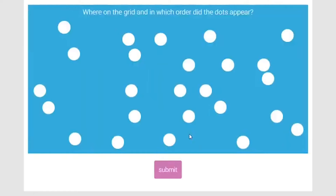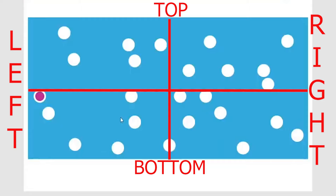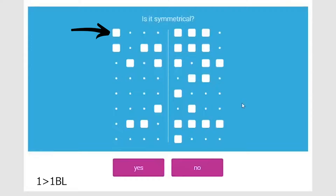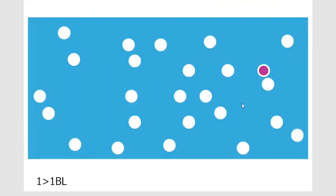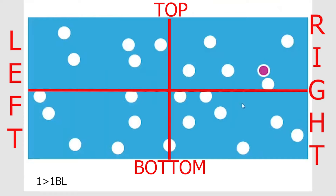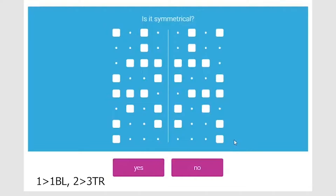On the next level, we start with the memory question. Creating a grid, the colored dot appears at the bottom left — first position — so we note '1BL.' Looking at the symmetry question, row one is not symmetrical, so we conclude the figures are not symmetrical. Next memory question: the colored spot is at the third position in the top right quadrant. Then another spatial image — row one, two, and three are all symmetrical, so yes.